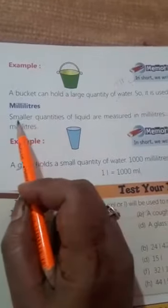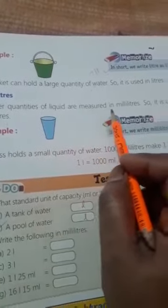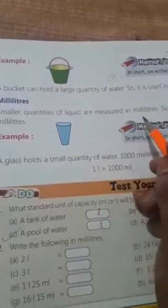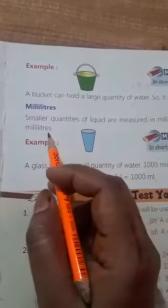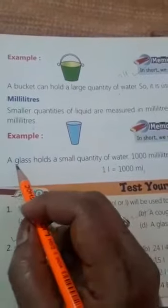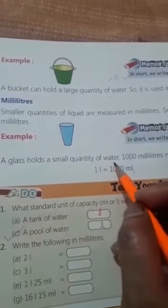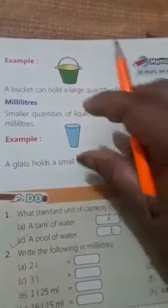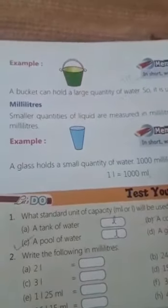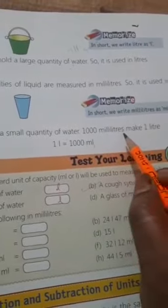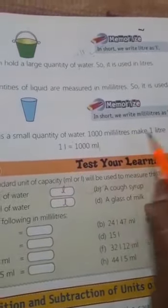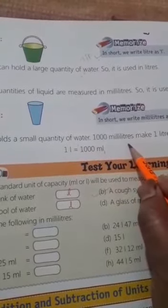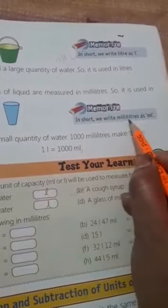Then, milliliters. Smaller quantities of liquid are measured in milliliters. Aur yadi aap ko smaller quantity mein chahiye, to we measured in milliliters. So, it is used in milliliters. For example, a glass holds a small quantity of water. A bucket, bucket mein larger quantity hoti hai, and glass mein usse kam hoti hai na. That is measured in milliliters. So, 1000 milliliters make 1 liter. 1 liter ke liye hamin kitne milliliters ki zarurat hogi? 1000 milliliters. In short, we write milliliters as ml.